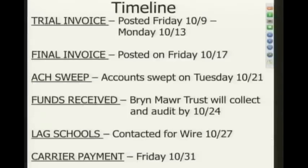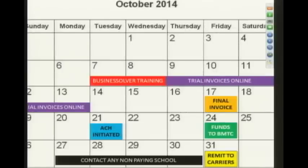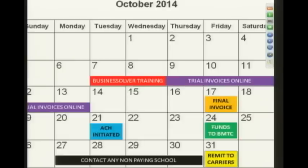In terms of the timeline, I put together both a text version and a calendar version — I'll send both out as a PDF. We're in training on the 7th and 8th. On Thursday through the 13th, you'll be given access and can go online to pull down your trial invoice, review it, and check for discrepancies. If everything looks correct, that bill is done and will reissue on the 17th. If you want to make changes, we can assist you with that, and it will true up with your records.